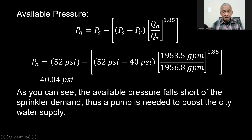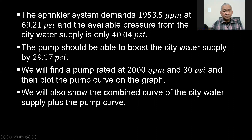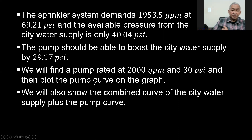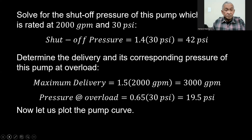So we need a pump to boost the city water supply. The sprinkler system demands 1,953.5 GPM at 69.21 PSI, and the available pressure from the city water supply is only 40.04 PSI. The pump should be able to boost the city water supply by 29.17 PSI. So we will find a pump rated at 2,000 GPM and 30 PSI, and then plot the pump curve on the graph. We will also show the combined curve of the city water supply plus the pump curve. The churn pressure of this pump is 1.4 times the rated pressure: 1.4 × 30 = 42 PSI.